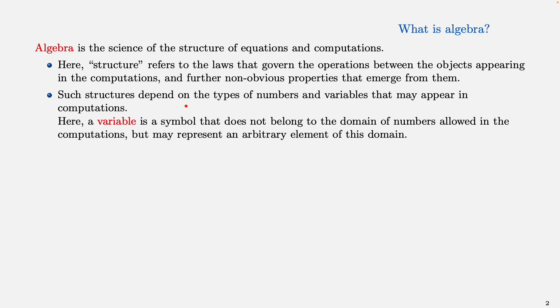Such structures depend on the types of numbers and variables that may appear in the computations. A variable is a symbol that does not belong to the domain of numbers allowed in our computations, but may represent an arbitrary element of this domain. For example, you're familiar with the letter x being used as a variable for integer numbers, where x may represent any integer number you like, but obviously x itself is not an integer number.